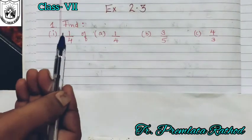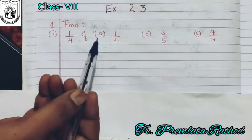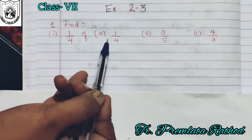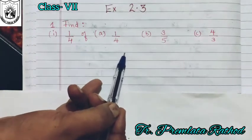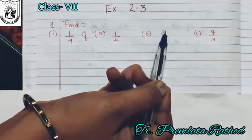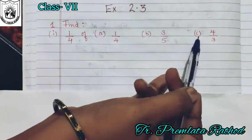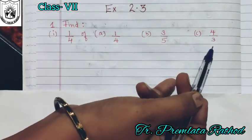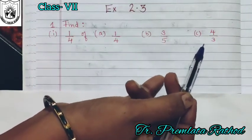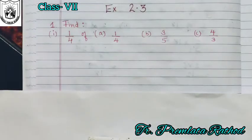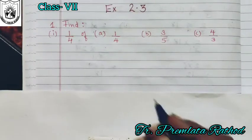Find one-fourth of the first question — one-fourth. Second question: three-fifth, and the third one: four-third. Similar type we have done in our last class. Let us solve.